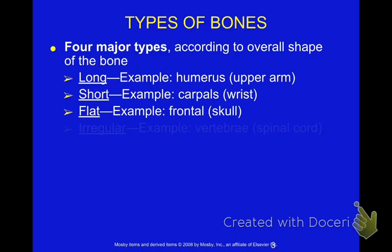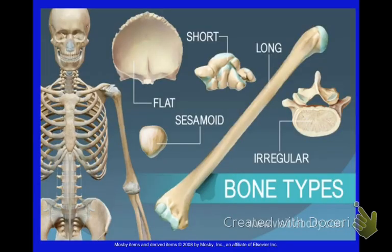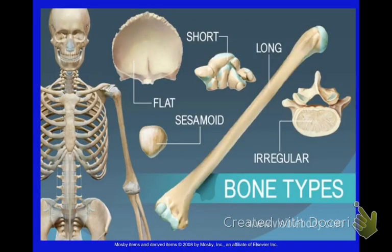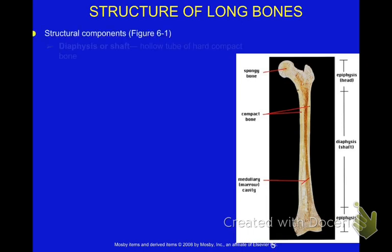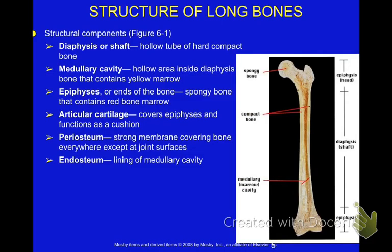Types of bones — four types: long, short, flat, irregular, and sesamoid bones. So if you're at home, you can pause and catch up. The different types of bones — this is very easy to understand, not complicated at all. This is where we start to get a little bit more complicated. You pause the video at home to get all of those words. Those of you who are here, we're going to look at the picture and talk about all the vocabulary terms while looking at an actual picture of a bone.